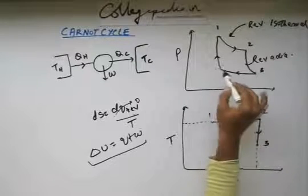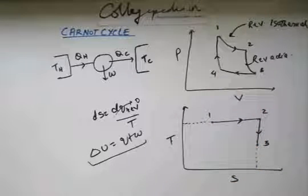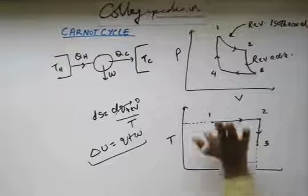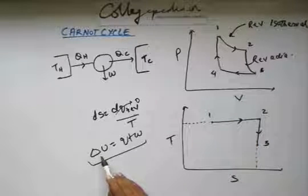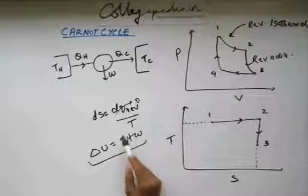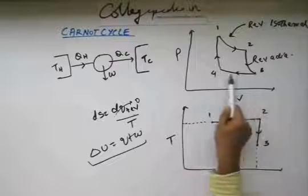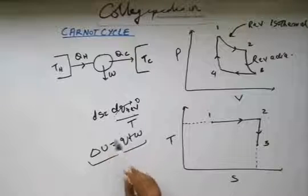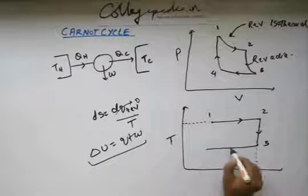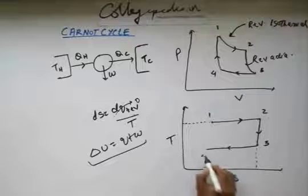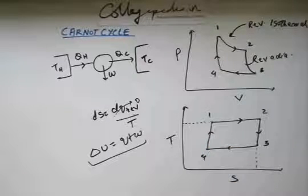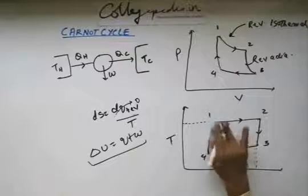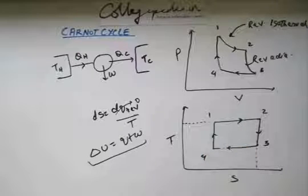From 3 to 4, temperature is again constant but volume is decreasing, so work is being done on the gas. Energy is given to the gas but internal energy isn't changing, so heat must be released from the system. dq is negative, so ds is negative — entropy is decreasing. From 4 back to 1 is adiabatic, so entropy remains constant — a vertical line on the T-S graph. This is how the complete T-S graph looks for the Carnot cycle.